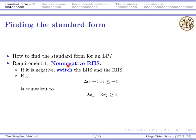Now let's show that given any linear program we can find its standard form. Requirement one is to have a non-negative right-hand side — this part is easy. If the right-hand side is negative, all we need to do is switch the left-hand side and the right-hand side. For example, if the right-hand side is negative 4, change it to a greater-than-or-equal-to constraint and make the right-hand side positive.